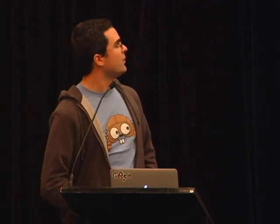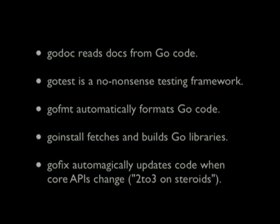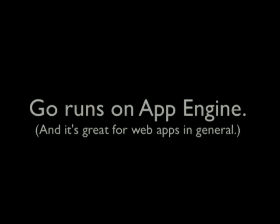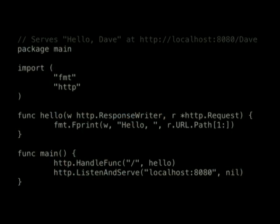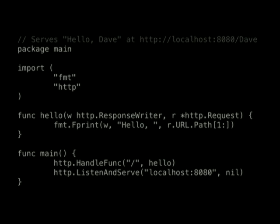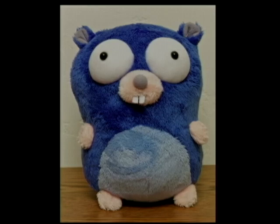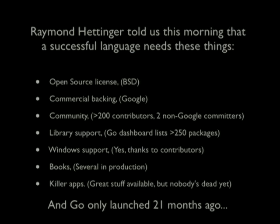Go is simple — each language feature is easy to understand and interactions between features are predictable. Go has great tools: Godoc (like PyDoc), GoTest (testing framework), GoFmt (automatically formats code), GoInstall (installs third-party libraries), and GoFix, which automatically rewrites Go code to adjust to new APIs whenever core APIs change. Go runs on App Engine — general availability was announced a couple of months ago. This hello world web app is less than 10 lines of code. Go has the coolest mascot — the Gopher. And Go will be successful — Raymond this morning described the criteria for a successful language, and Go has them. Please check it out.